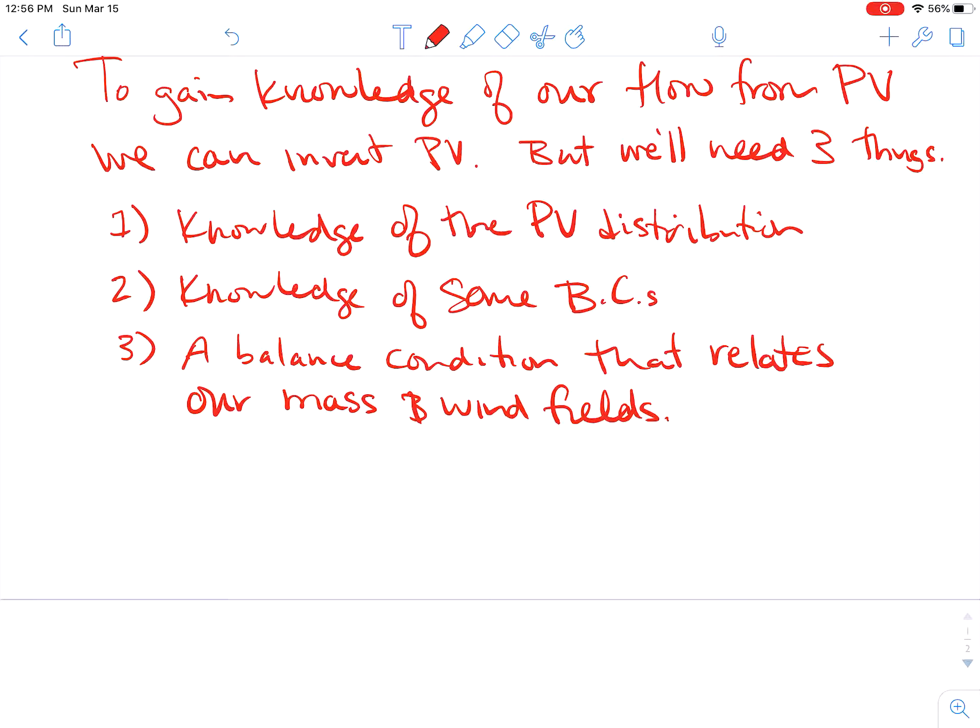But we could use, for example, gradient wind balance or a form of gradient wind balance as our balance condition coupled with some appropriate boundary conditions and the knowledge of the PV distribution to then back out all of the components. If we know our PV distribution and we use an appropriate balance condition such as gradient wind balance in the upper parts of the atmosphere, plus our boundary conditions...